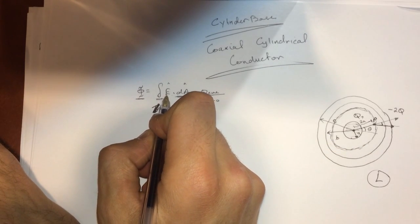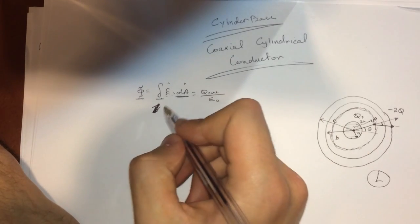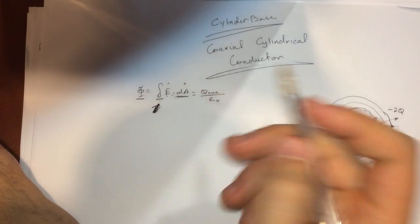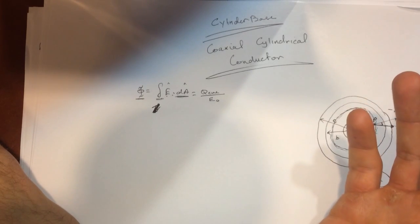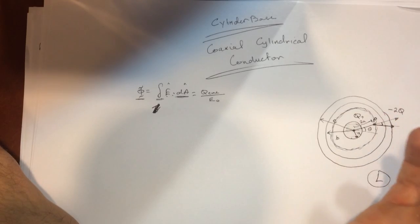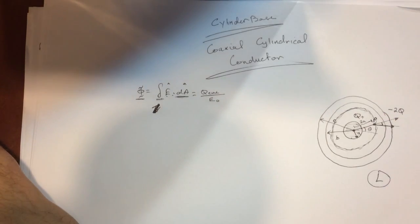Since E will be constant everywhere on this surface, we can take it out of the integral. The dot product will be E times dA times the cosine of the angle between the dA and the E, the electric field vector.